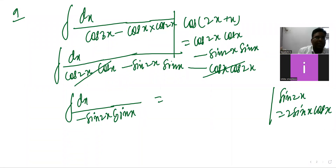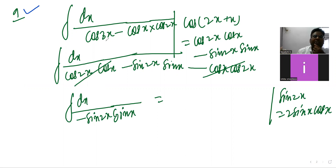Let's see question number 9: integration of dx divided by (cos3x minus cosx) into cos2x. I will write cos3x as cos(2x + x).